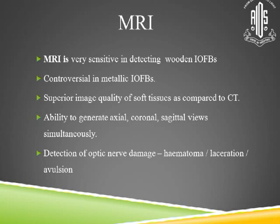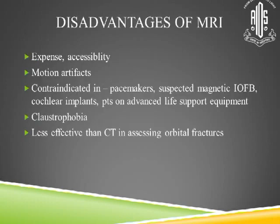MRI is very sensitive for detecting wooden and glass IOFBs but is controversial in metallic IOFBs. It offers superior soft tissue image quality and the ability to generate axial, coronal, and sagittal views simultaneously, and can detect optic nerve hematomas, lacerations, or avulsion. Disadvantages include expense, accessibility issues, motion artifacts, contraindication in patients with pacemakers, cochlear implants, or life support equipment, claustrophobia, and it is less effective than CT in assessing orbital fractures.